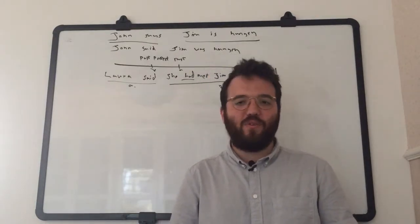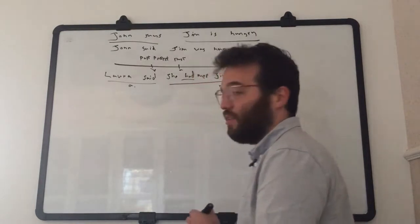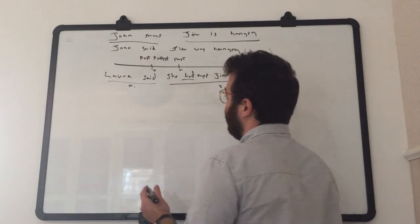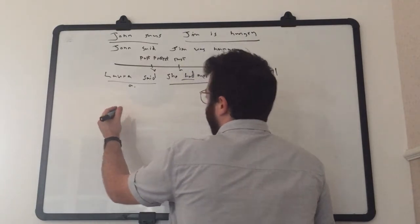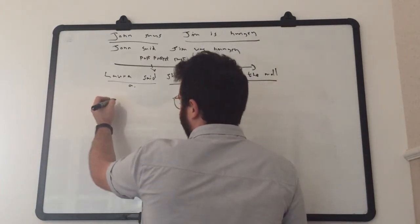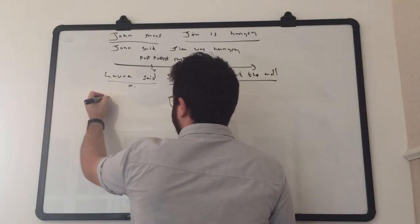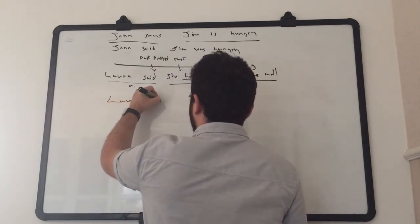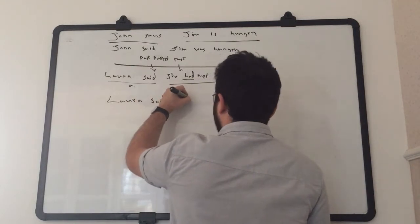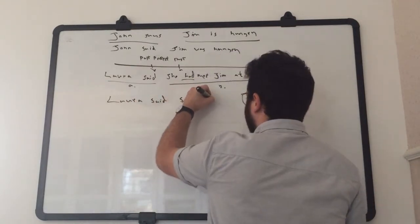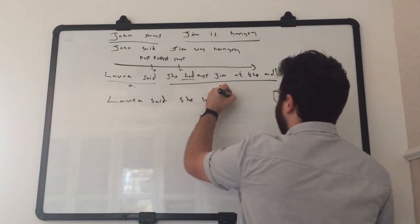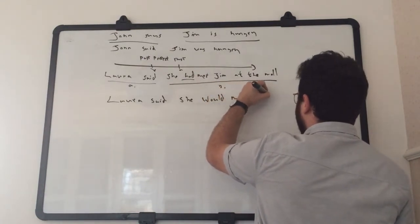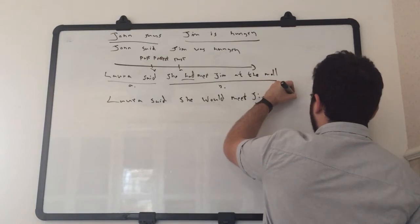But what happens when we want our dependent clause to happen after the main clause when the main clause is in the past? So, here, our complex sentence will look like this. Laura said she would meet Jim at the mall.